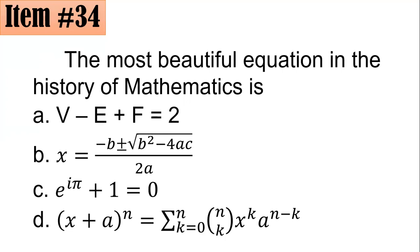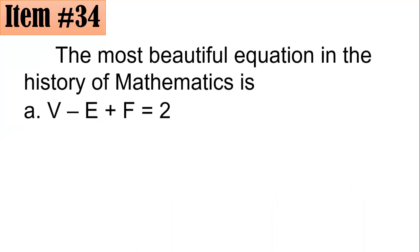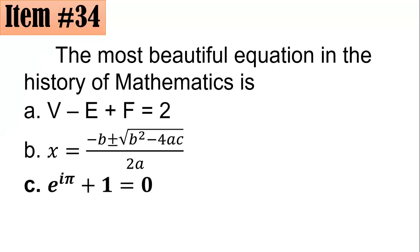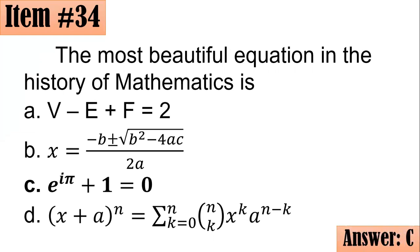The correct answer is letter C. e^(iπ) + 1 = 0. e is your natural logarithm base, i is the imaginary unit, π is the ratio of circumference to diameter, 1 is the additive identity, 0 is the multiplicative identity. It combines five constants into one equation. Letter C is the correct answer.